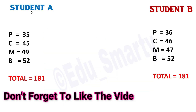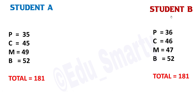Here is an example of Student A and Student B. If you compare it with 20 students, if you compare with other students, you will be able to compare with the same ranking. Here the total is 181, Student B is 181, and PCM is 4. Now everyone has the same ranking.